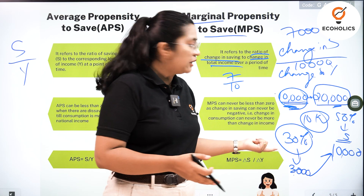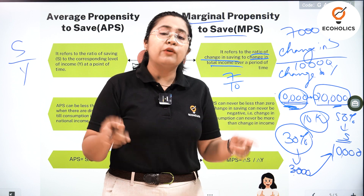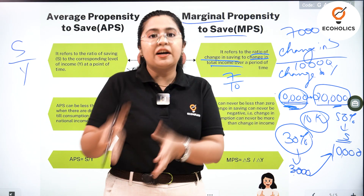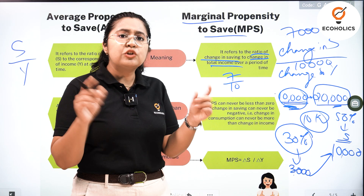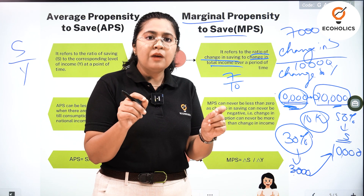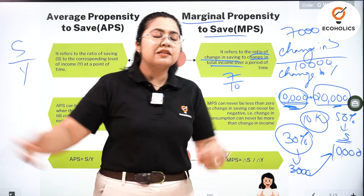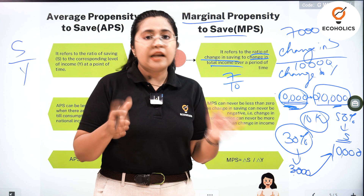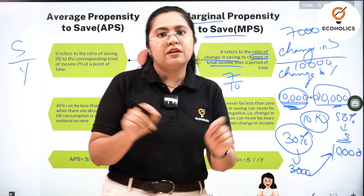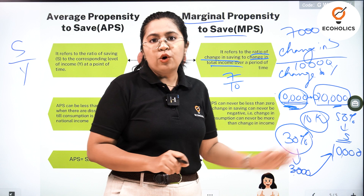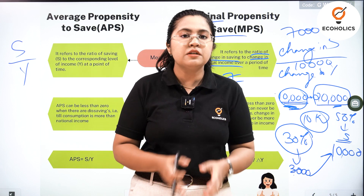For MPS, we are not talking about the fraction of absolute values — we are talking about the ratio of the change that has happened in the values. So your APS was 3 upon 10, while your MPS is 7 upon 10. We have now understood both APS and MPS and the basic difference between them.